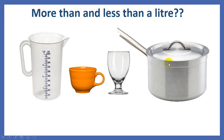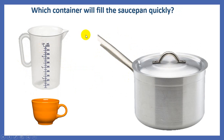Whereas this saucepan will contain more than a liter. Now which container will fill the saucepan quickly? Will the 1 liter jug help me to fill this container that has the capacity of 5 liters more quickly, or this cup? Yes, this jug will help me to quickly fill this 5 liter saucepan.